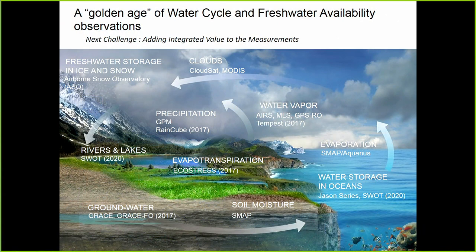This is kind of what NASA thinks of as a golden age of water cycle and freshwater availability observations. We now have a mission that covers almost every aspect of the terrestrial water cycle. We're getting evaporation, atmospheric water vapor transport over land, precipitation, snow, rivers and lakes from SWAT, we're getting groundwater from GRACE. So much of this map, we've got all these things covered.